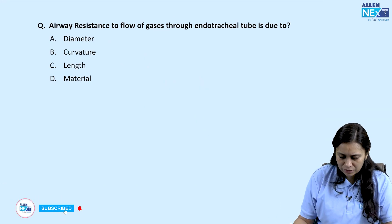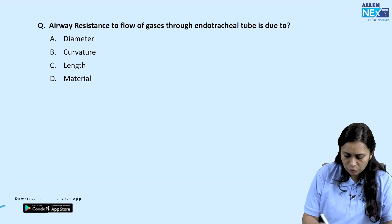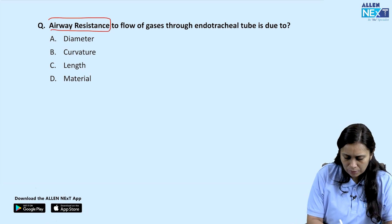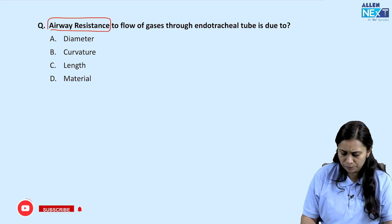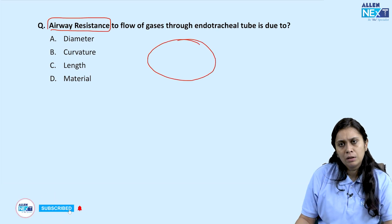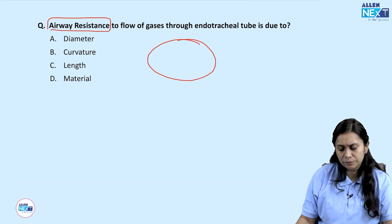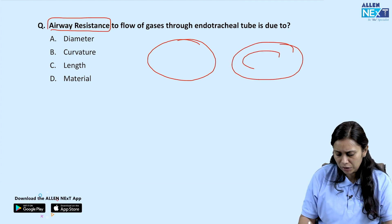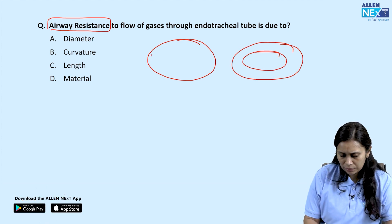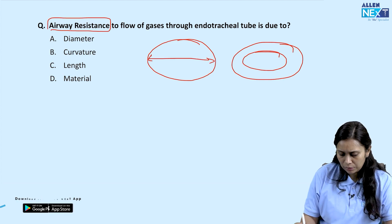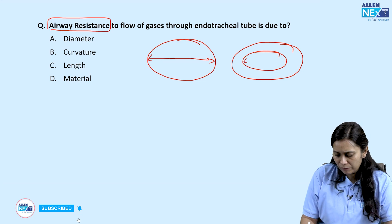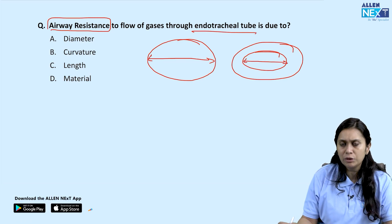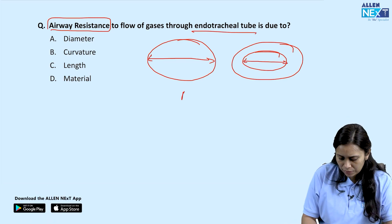Next question: airway resistance to the flow of gases through an endotracheal tube is due to what? Why is there resistance to gas flow when a patient breathes through an endotracheal tube? Looking at the cross-section of the trachea versus the trachea with an endotracheal tube inside, the ventilating lumen available for breathing is significantly reduced when the ETT is in place.